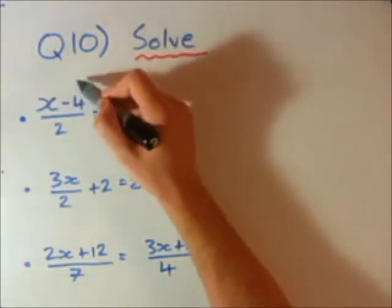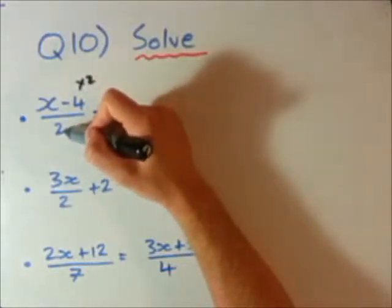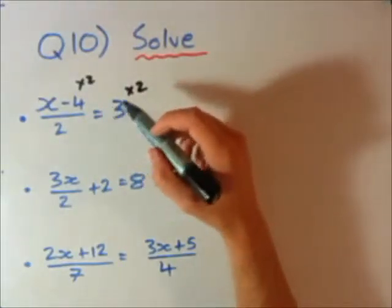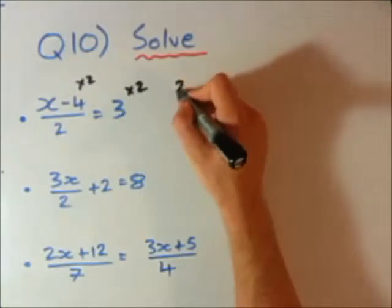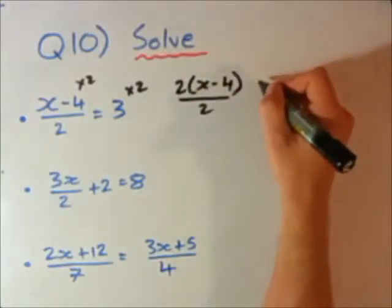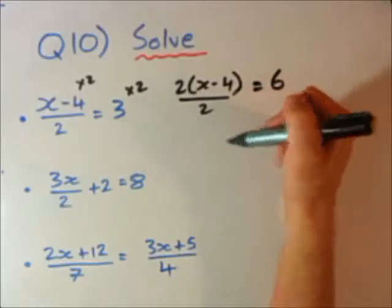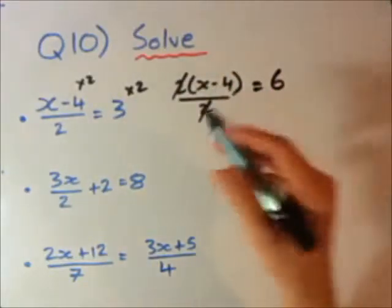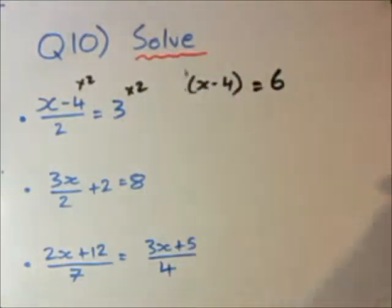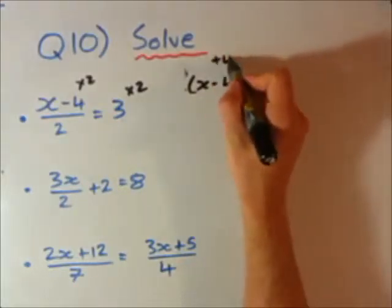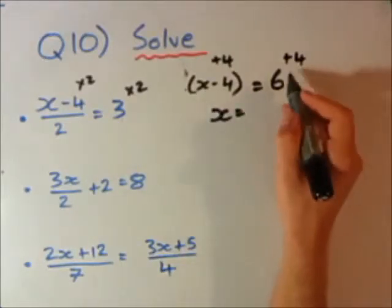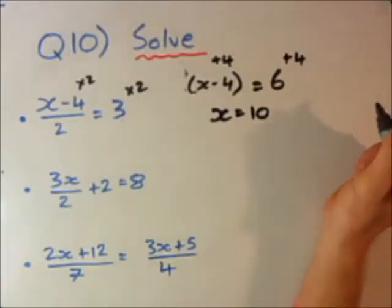Let's look at the first one. I'm going to straight away times the left hand side by 2 to get rid of this 2 down the bottom, and because I've times the left hand side by 2, I also need to times the right hand side by 2. So 2 times (x minus 4) over 2 equals 3 times 2 is 6. You can see why I times that because now I can just cancel. I'm left with x minus 4 equals 6.